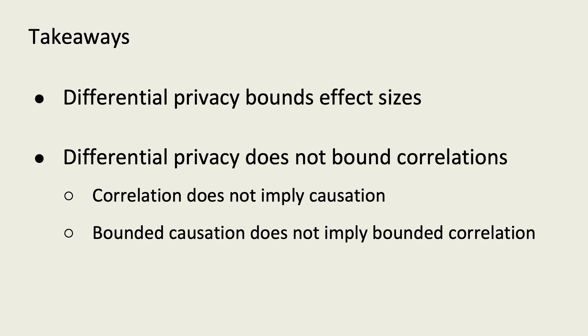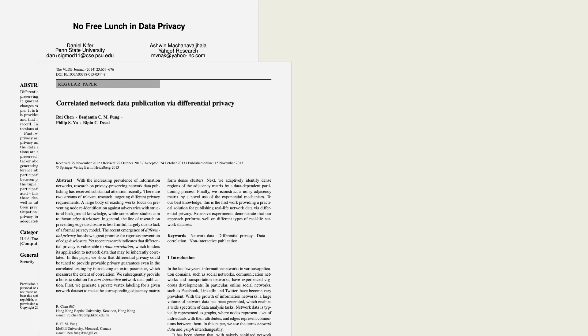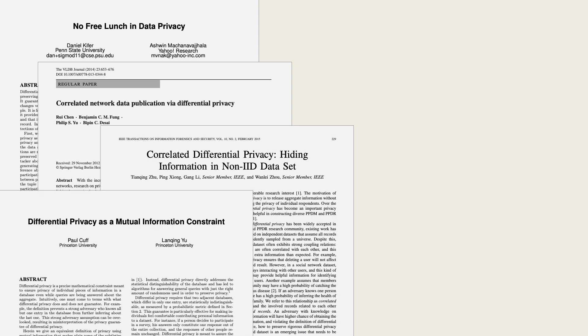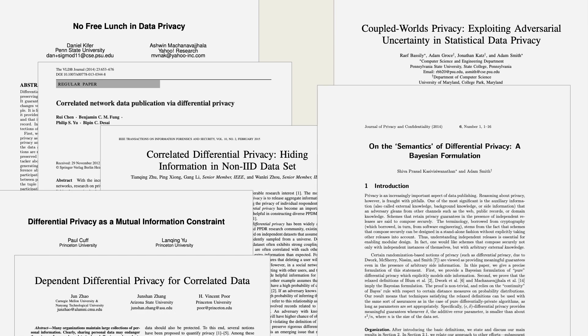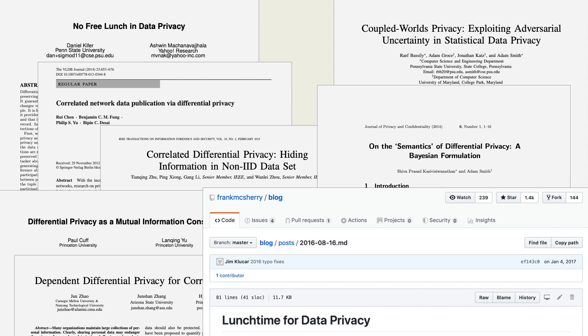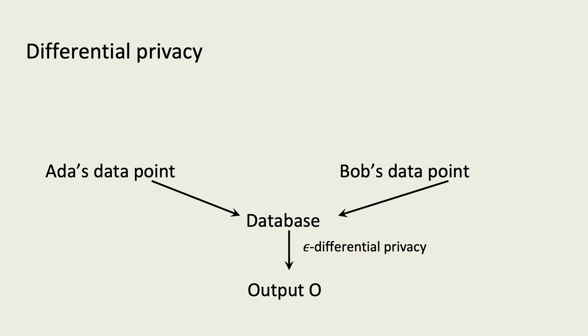Our starting point for this work is a disagreement in the prior work about differential privacy. Authors disagree about whether differential privacy requires assumptions about the data to work. How can such disagreement arise about a mathematical property? To answer this question, let's start with an example to understand what differential privacy provides.